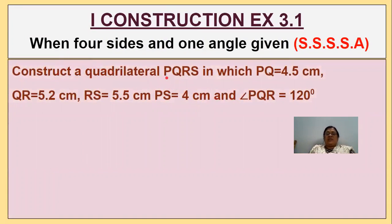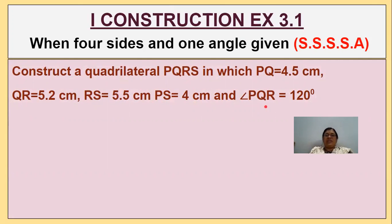Construct a quadrilateral PQRS where PQ = 4.5 cm, QR = 5.2 cm, RS = 5.5 cm, PS = 4.5 cm, and angle PQR = 120 degrees. These are the four sides of the quadrilateral and one angle is given.